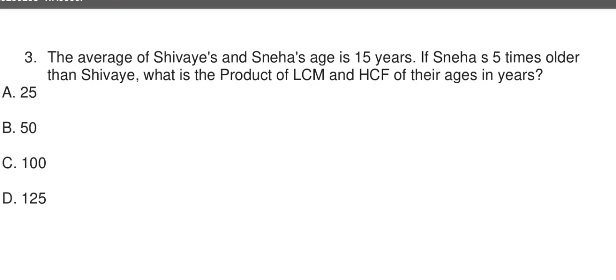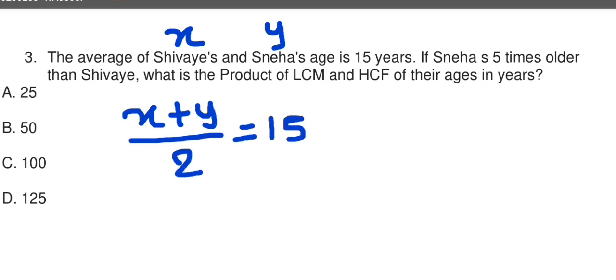The average of Shivaye's and Sneha's age is 15 years. First, for ages, let this age be X and Sneha's age be Y. The average of both ages means X plus Y divided by 2 is equal to 15. If Sneha is five times older than Shivaye, means Y is equal to 5 times X. The question asks what is the product of LCM and HCF of their ages in years. So first, we need to know their ages.